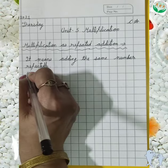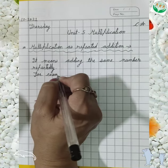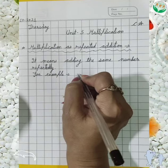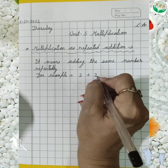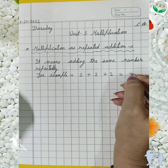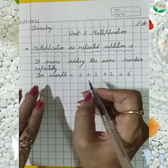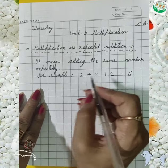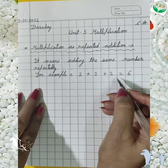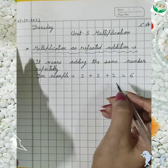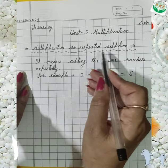For example, if I have the number 2, then 2 plus 2 plus 2 is equal to 6. Here we add the same number 2 three times — 1, 2, 3 — I have added the same number repeatedly and got the answer 6. This is multiplication as repeated addition.